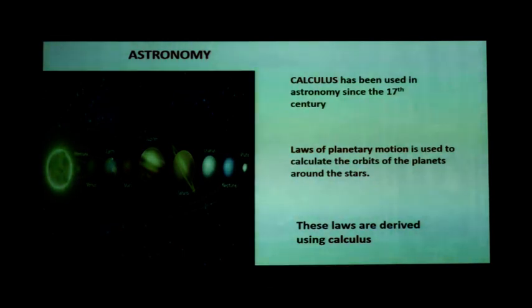It is a known fact that the laws of planetary motion is used by astronomers to calculate the orbits of planets around the stars. But have you ever thought how these laws were derived? It is derived using calculus.